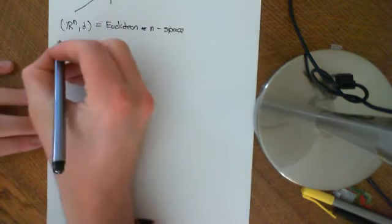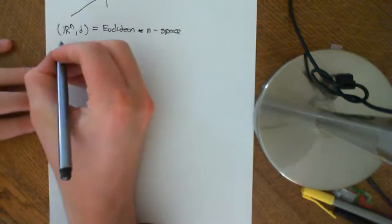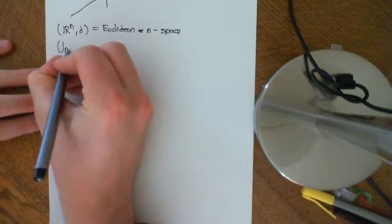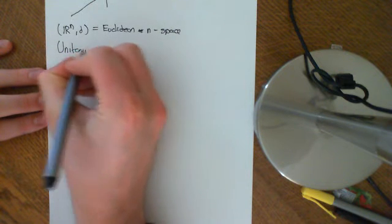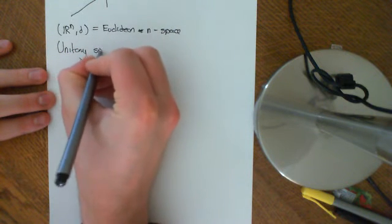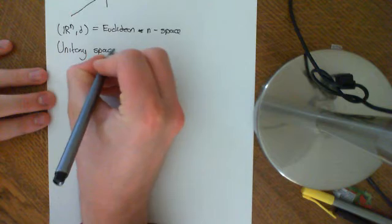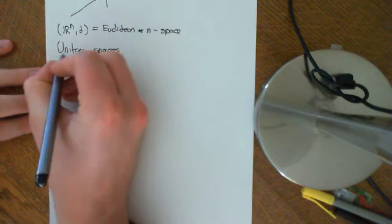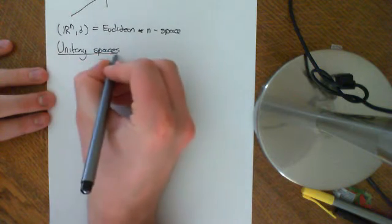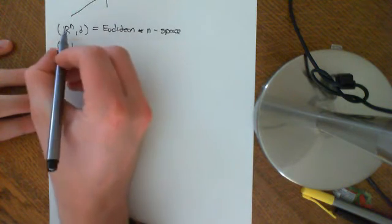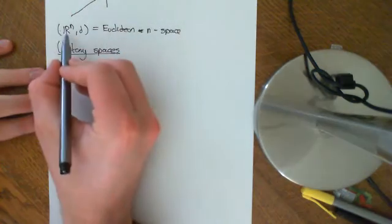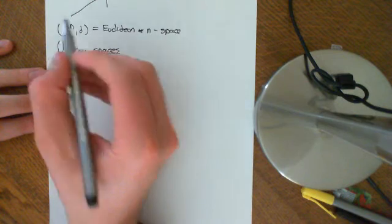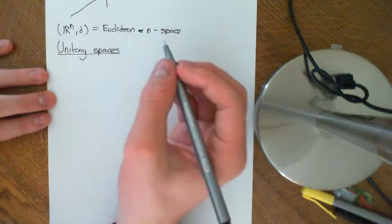We're going to look at the concept of unitary space. Unitary spaces are very similar concepts to Euclidean spaces, but instead of using real numbers, we use complex numbers.